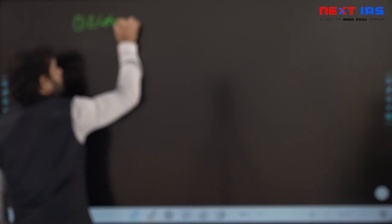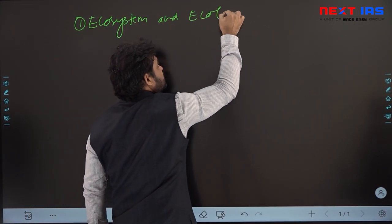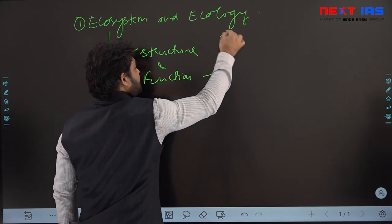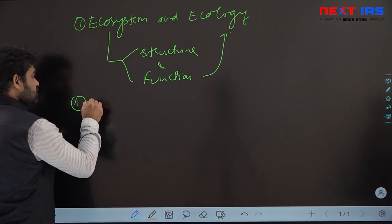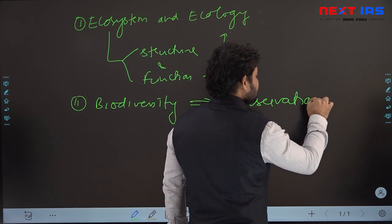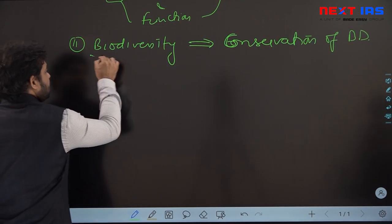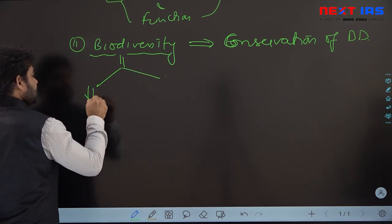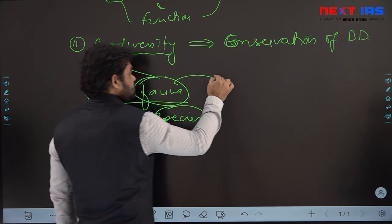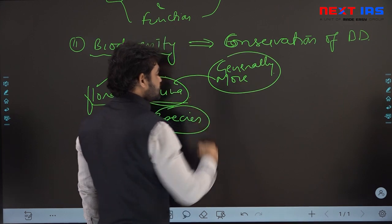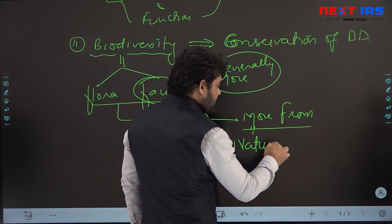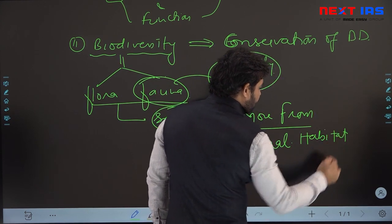Your strategy should focus on: number one, all dimensions of ecosystem and ecology — both structure and function of ecosystems combined with ecology. Number two, biodiversity — what it is, and conservation of biodiversity. Biodiversity means variety of species, flora and fauna. In prelims, more questions come generally from faunal species, more from species with natural habitats — and if this natural habitat is in India, it becomes significantly more important from the examination point of view.